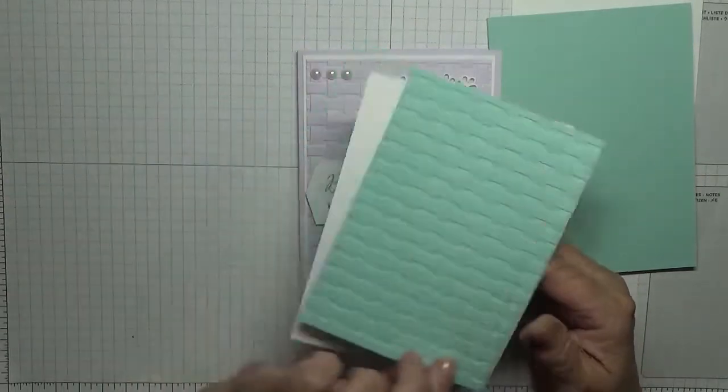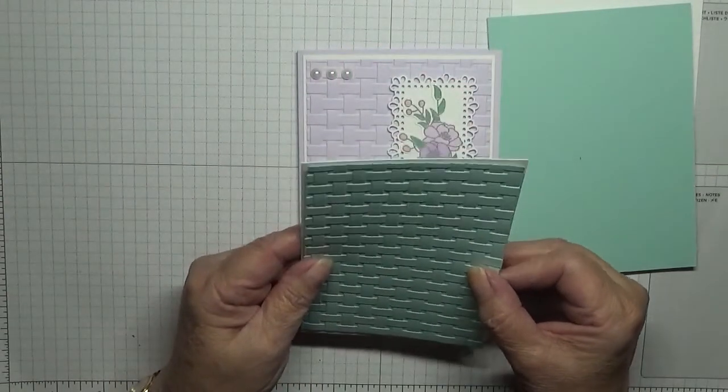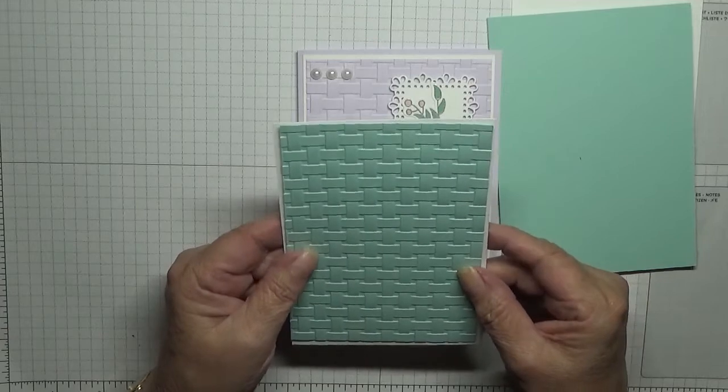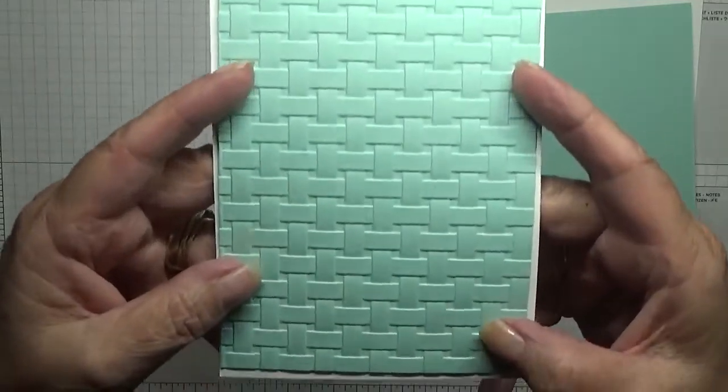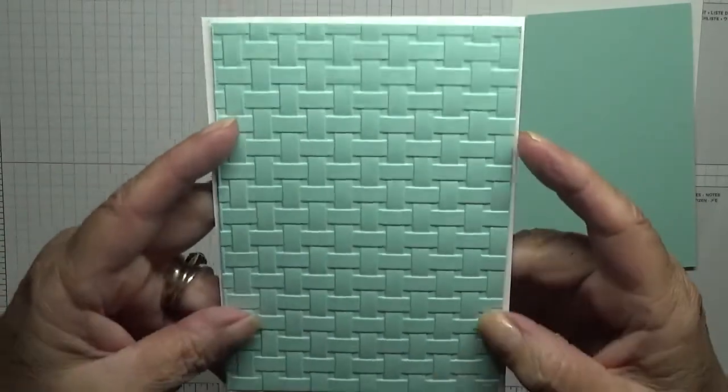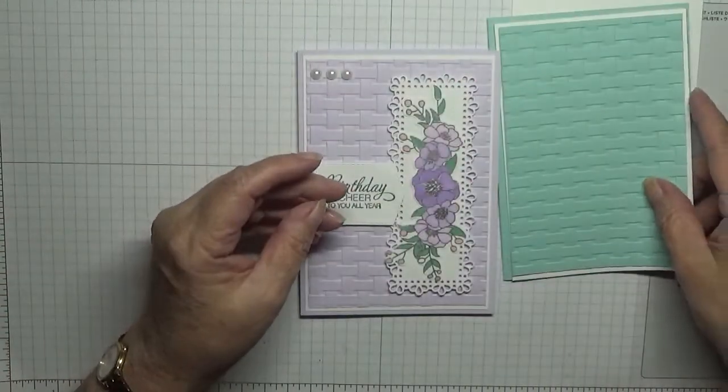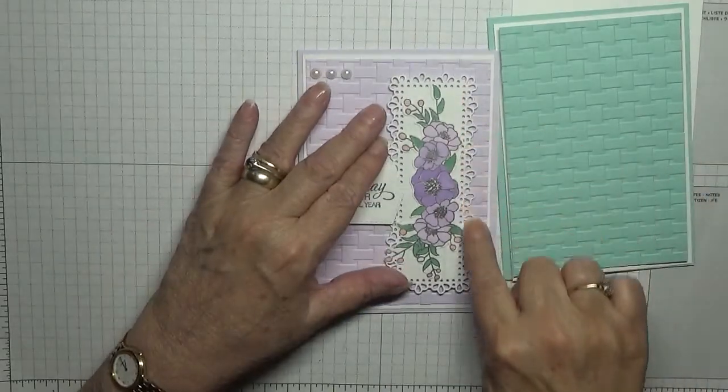I've already embossed it with the basket weave. You can see there and that goes on the top like that. And I've also cut out this one.